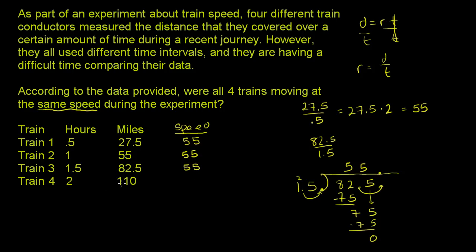And then finally, if you do 110 miles in two hours, 110 divided by 2 is 55. So they did indeed all go, or they all did move at the same speed during the experiment.